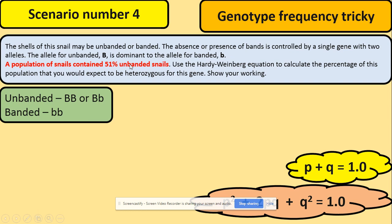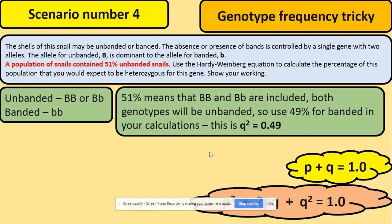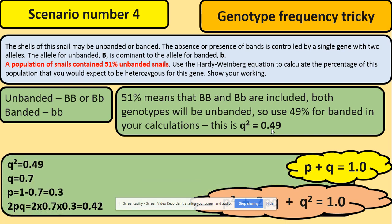So what that means is that unbanded could be either heterozygous or dominant homozygous because that's where we will have big B in our genotypes, and then the banded would be bb. So within this 51% we are looking for p squared and 2pq. So we don't know which one is which then. So what we can do instead is use the fact that we know for sure that the frequency of banded snails will be 49%, and this is what you're going to use in your calculations.